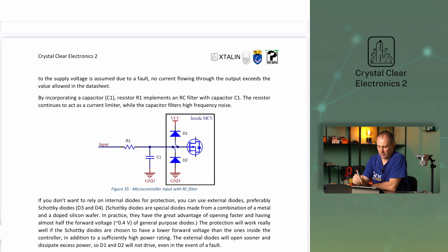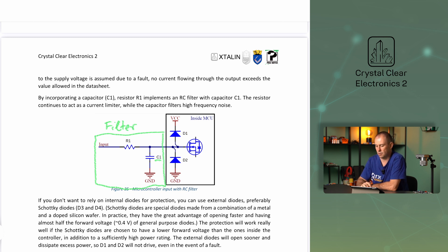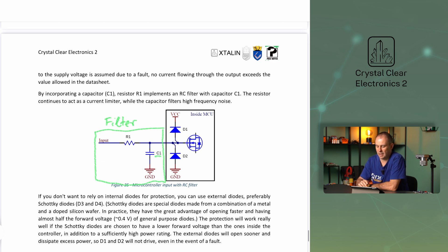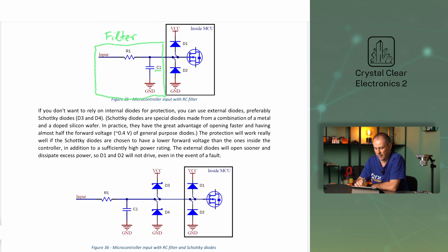The same solution can also be used to protect the outputs. In this case, it must be dimensioned such that when the controller output is set to a logic high or low level, and a short circuit to earth or the supply voltage is assumed due to a fault, no current flowing through the output exceeds the value allowed in the datasheet. The resistor R1 implements an RC filter with capacitor C1. The resistor continues to act as a current limiter, while the capacitor filters high frequency noise. If you don't want to rely on internal diodes for protection, you can use external diodes, preferably Schottky diodes D3 and D4 in the figure. Schottky diodes are special diodes made from a combination of a metal and a doped silicon wafer. They have the great advantage of opening faster and having almost half the forward voltage of general purpose diodes. This makes the system redundant and therefore much more reliable.